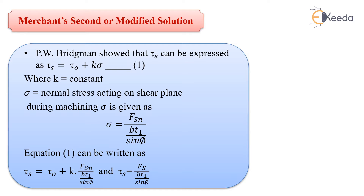Bridgman gives the relationship: tau_s equals tau_0 plus k into sigma, where k and tau_0 are constants, and sigma is the normal stress acting on the shear plane. We consider sigma as the normal component of the shear force — that is Fsn — divided by the shear area Bt1 divided by sin phi.